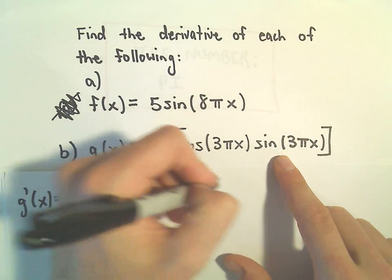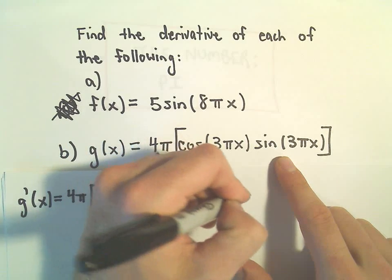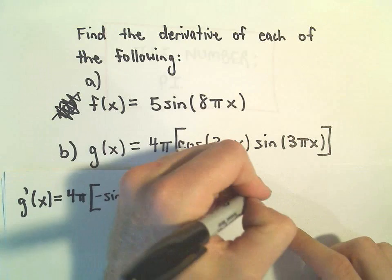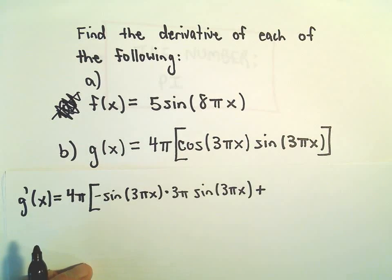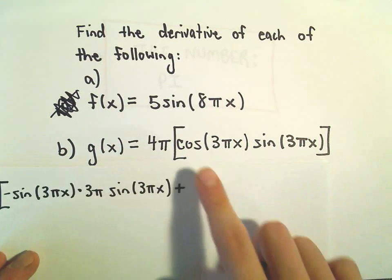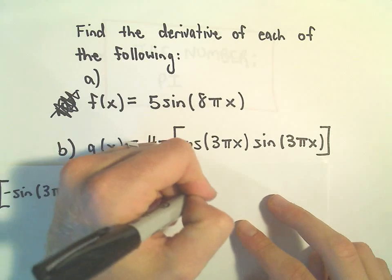And now we'll leave the sine of 3πx, we'll leave that part alone. Then we'll put the plus in between there. And now we'll kind of do the same thing. So, now we can leave the cosine of 3πx alone.